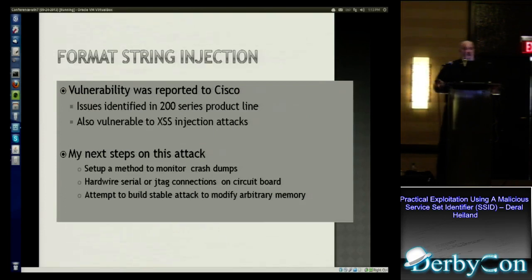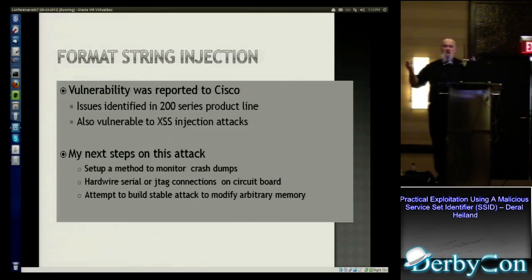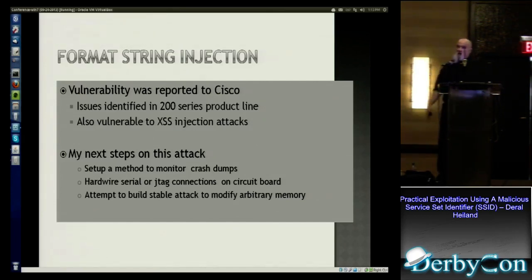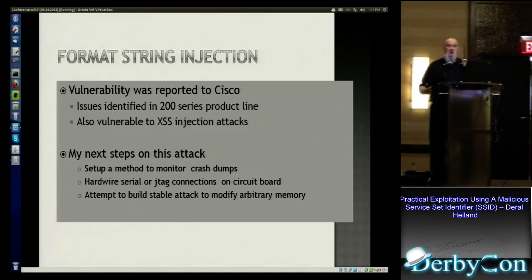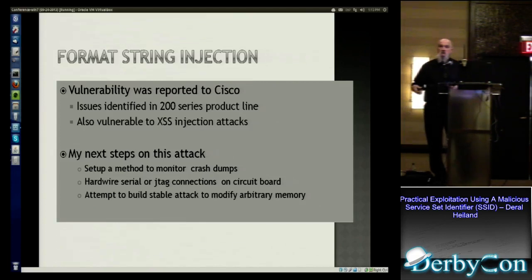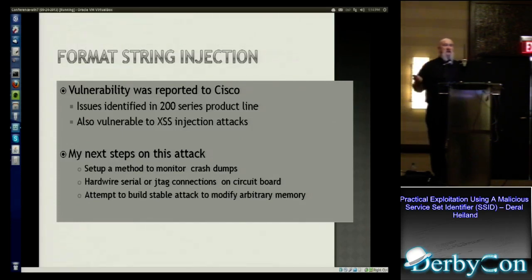I reported this to Cisco. They went ahead and patched it — it was vulnerable in their whole series of 200 and 2000 small business products, four or six items. I would love to try to get code execution on this, but I could not identify JTAG or serial connections internal to the device. So if anyone here is a good hardware hacker and wants to play around and work with this — and you can show you're not going to brick the device — I'll go ahead and let you have one. You can play around with it, get dumps off it, and see if we can actually get code execution.